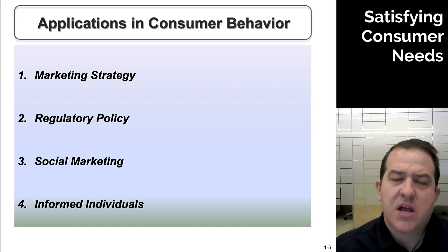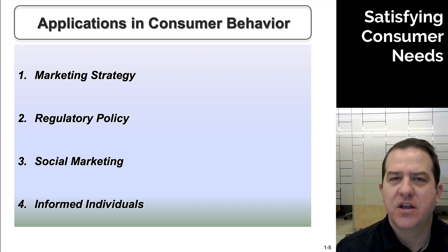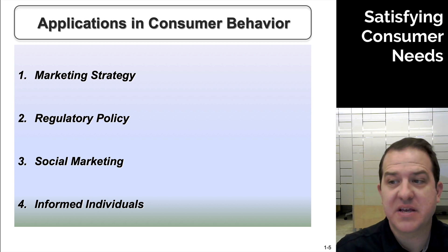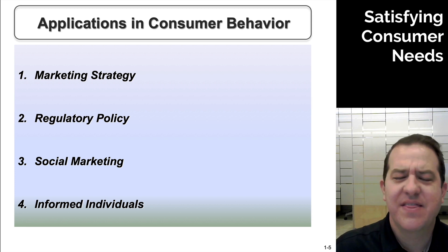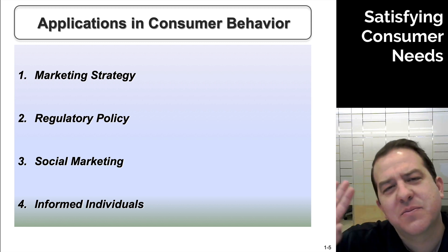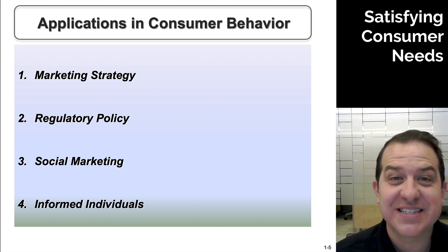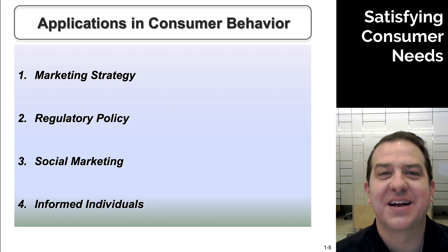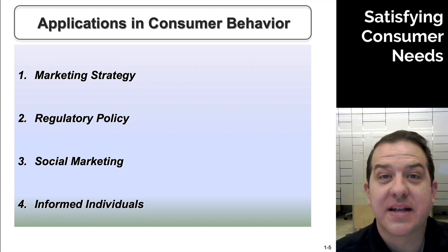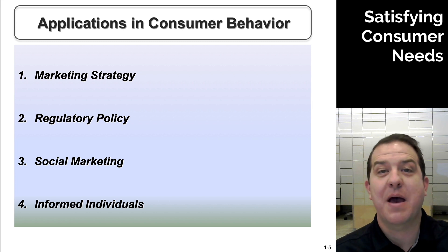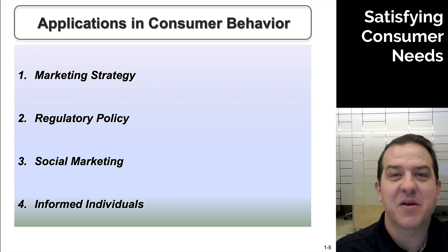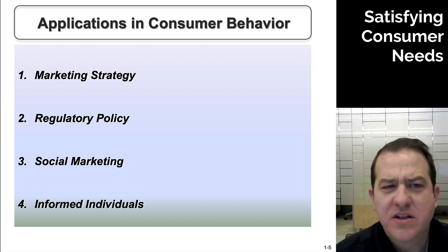Then there's social marketing — like what if we're trying to help people stop smoking, or raise awareness about cancer? We can do that with social marketing. Finally, there's informing individuals, and I think this is really important because far too often in marketing we think 'that doesn't apply to me' — and then we make a bad purchase without realizing we got taken in by marketing spin. Good marketing satisfies needs, creates happy customers, generates revenue, and produces positive outcomes for everyone in that ecosystem.